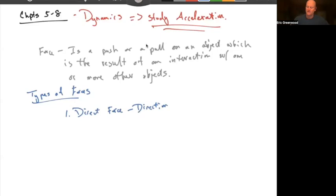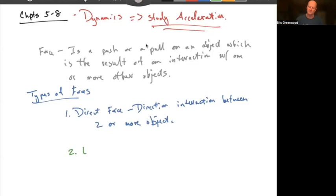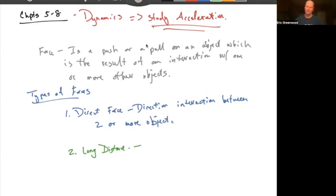This is a direct interaction — two or more objects in direct contact with each other. The second type is what's known as a long-distance force. A long-distance force is an interaction between two objects that are spatially separated from each other — they're not exactly touching each other, not at the same spatial location. They are spatially separated from each other — two or more objects interacting with spatial separation.